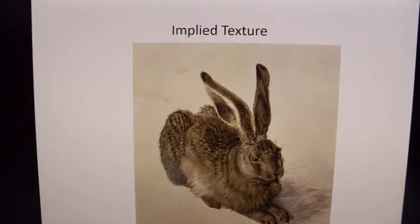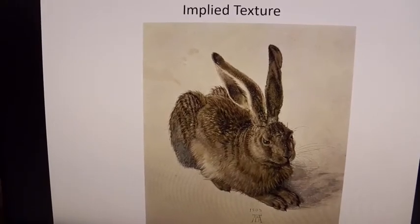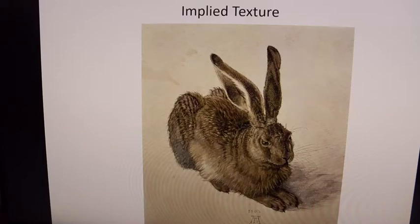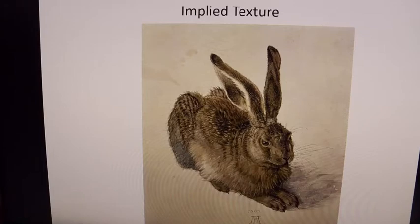Implied texture has no actual texture, but it hooks into the part of your brain that fills things in. If you've touched a rabbit, close your eyes and think about what a rabbit feels like — it's incredibly soft. I can close my eyes and feel that texture because Albrecht Dürer, the name of this artist, was exceptionally good at implied texture.